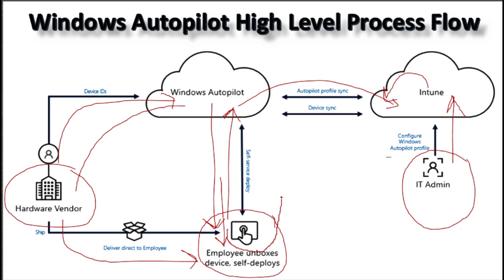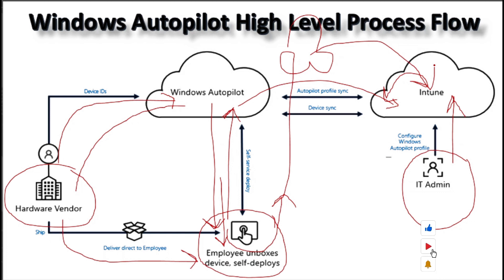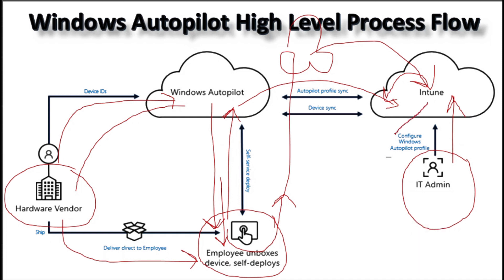Once the machine is back online, the user is on the onboarding page where they need to provide their Azure AD credentials. Once they provide their credentials, the machine is going to join Azure AD and enroll in Intune because we already enabled automatic enrollment. Once the machine is enrolled in Intune, all the device-based and user-based policies are deployed on that device and installed during the ESP page. Once deployments are completed, the user can log in with their Azure AD credentials and they are ready to use their machine.